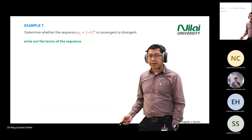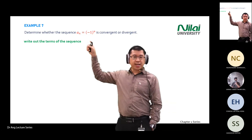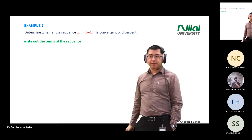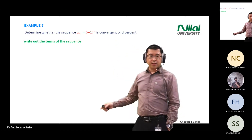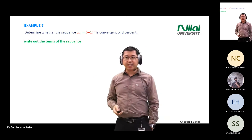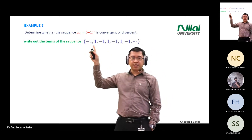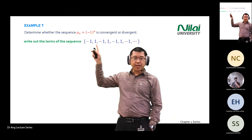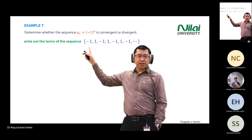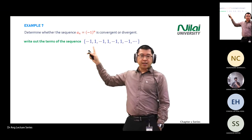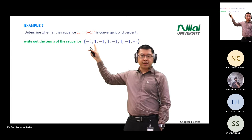Look at another example. The next example is to determine whether a sequence is convergent or divergent. The first step is to write out the data. If your sequence a_n equals (-1)^n, starting with n equal to one, you get minus one.